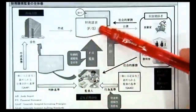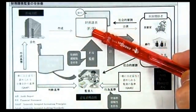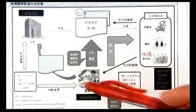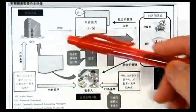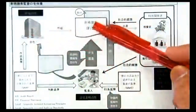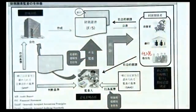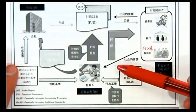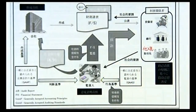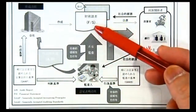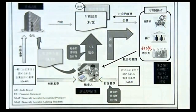会計士（監査人）が監査をしてその結果を監査報告書という形で会社に提出します。会社はこの監査報告書を財務書表に添付して世の中に公表します。監査とは会社が作った財務書表が正しいかどうかをチェックし、正しいまたは正しくないという意見を述べることです。